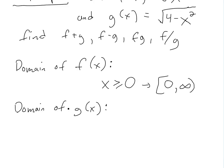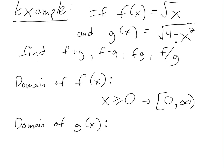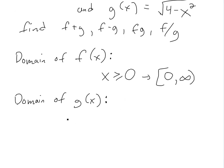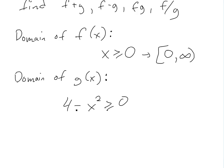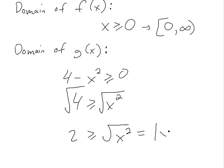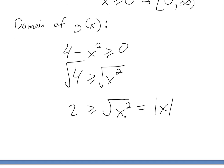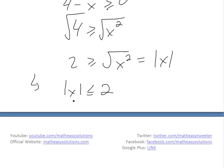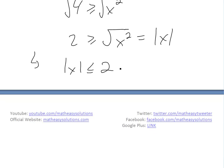Now let's look at the domain of g(x). Again, the inside of the square root must be greater than or equal to 0, so 4 − x² ≥ 0. Rearranging: 4 ≥ x², and taking the square root of both sides gives 2 ≥ |x|, which means |x| ≤ 2. So the domain of g(x) is the closed interval [−2, 2] — defined at both endpoints.